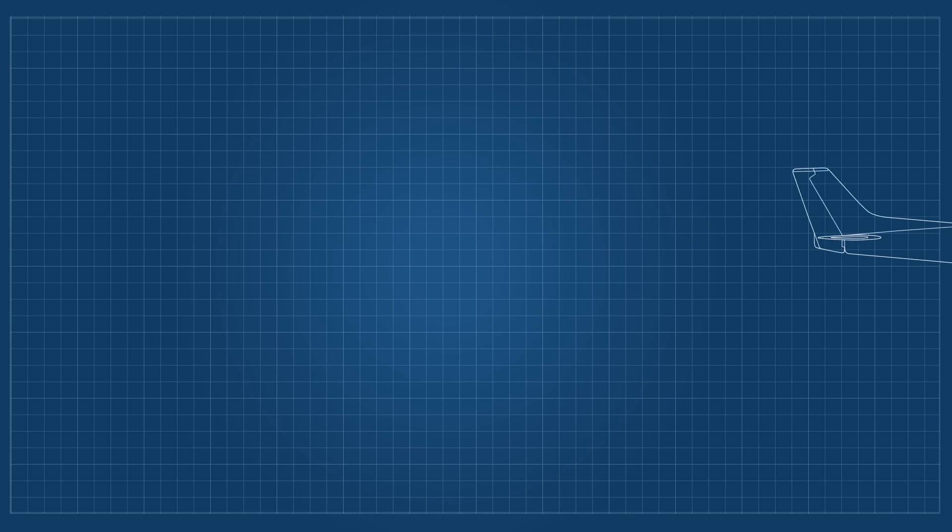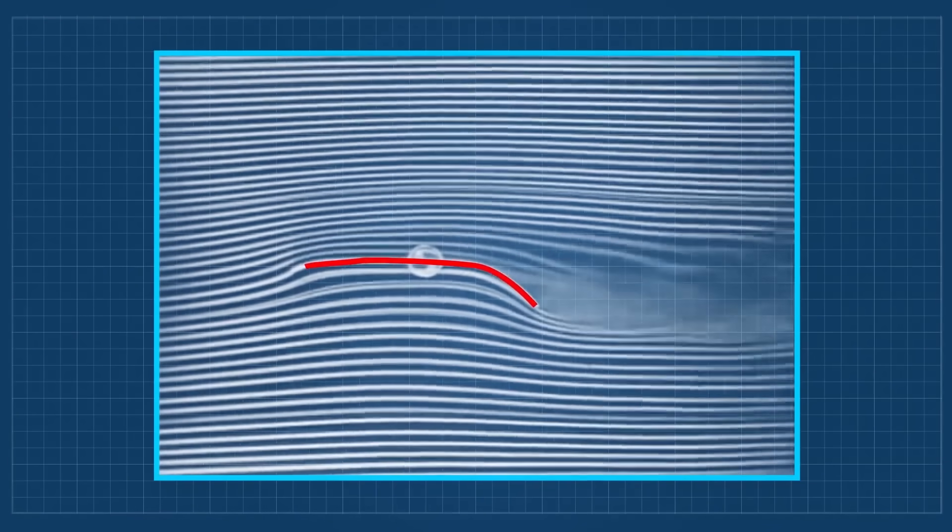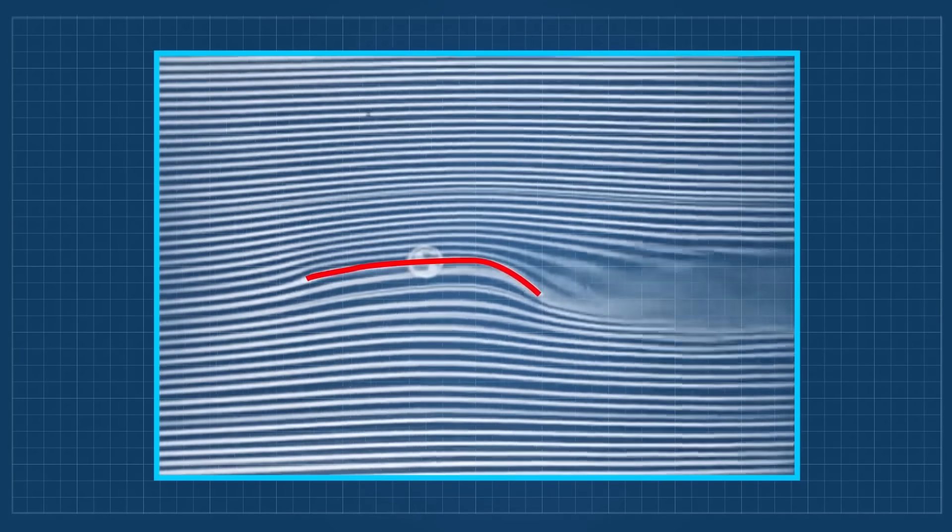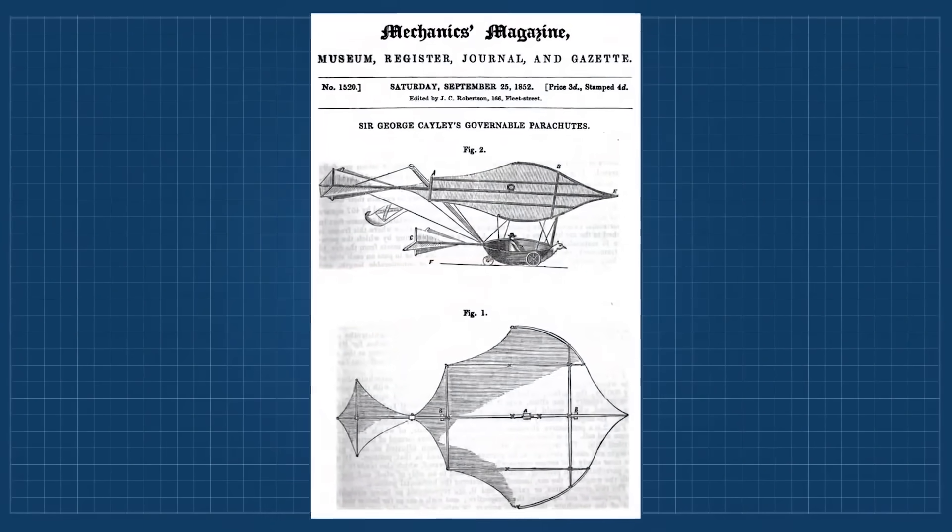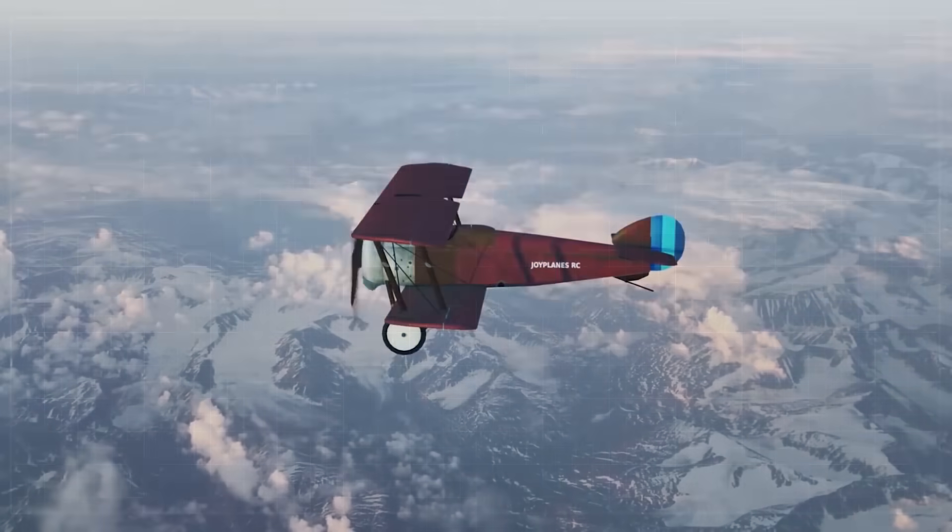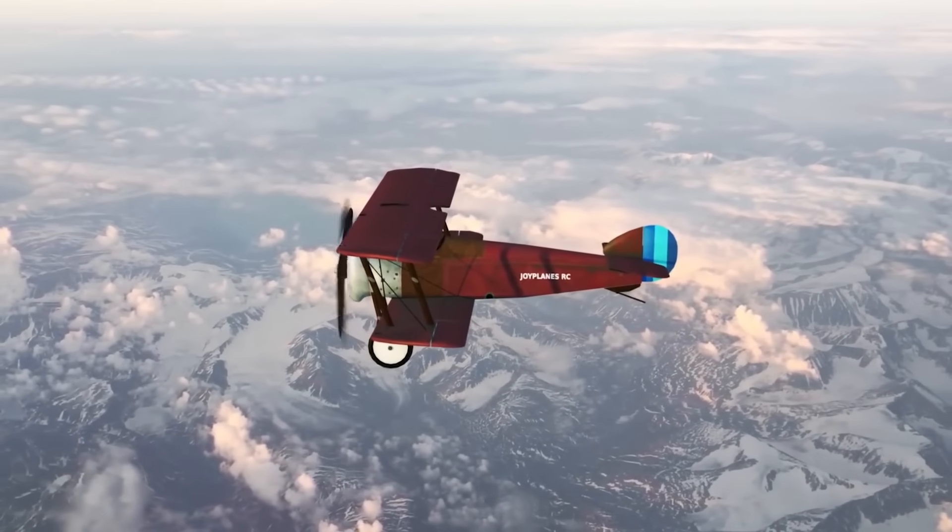He also performed some aerodynamic experiments and discovered that a wing with a curvature was more efficient in producing lift. In fact the Wright brothers studied his work and research to build their plane. But we can talk about this whole story in another video. Let's carry on with the biplanes.